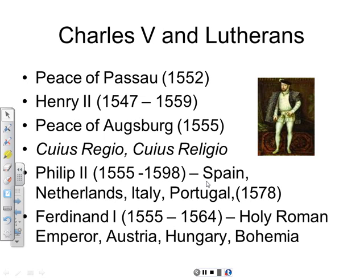Eventually these German princes formed an alliance to fight against Charles V, and this alliance got a big boost when Henry II came to the throne of France in 1547. Like his father Francis, Henry II was ostensibly Roman Catholic but had no problem aligning with others if it boosted his self-interest. Henry II made an alliance with the Lutherans of Germany, and Charles V was not in a position to defeat this alliance. At the Peace of Passau in 1552, the war ended, and Charles V's vision of creating a stronger Holy Roman Empire and establishing the unity of the Church was dashed.